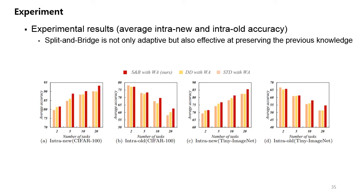And we also compare the intra-new accuracy and intra-old accuracy of each method on average. In order to focus on the effectiveness of each training scheme, we conduct this analysis using only the method with WA. Through the results, we can see that split and bridge always shows the best intra-new accuracy in both datasets, which tells our separated learning training method is quite effective to learn the intra-new knowledge. And another observation is that split and bridge method is not only highly adaptive to new classes, but also good at preserving the intra-old knowledge.